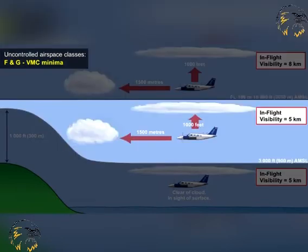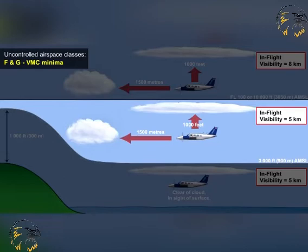The next level to consider in uncontrolled airspace is that below 10,000 feet or flight level 100, but above 3,000 feet measured with respect to mean sea level. In this level band, VMC minima in uncontrolled airspace require the pilot to have an in-flight visibility of at least 5 km, and to be able to maintain vertical separation from cloud of at least 1,000 feet, and horizontal separation from cloud of at least 1,500 meters.